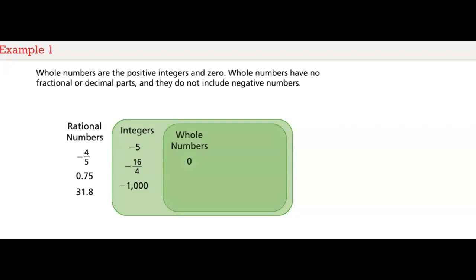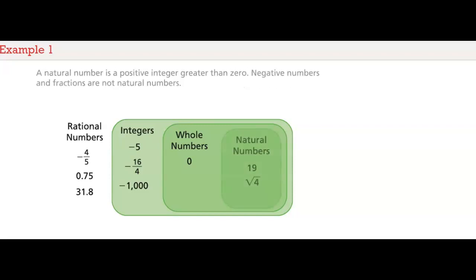Whole numbers are the positive integers and zero. Whole numbers have no fractional or decimal parts, and they do not include negative numbers. A natural number is a positive integer greater than zero. Negative numbers and fractions are not natural numbers.